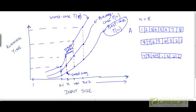Likewise, if I take the topmost — the highest points in the range — for the running times for the various input sizes, I am going to get the worst case running time. And if I determine the average running time for each input size and connect together those average values as a function of input size, I am going to get the average case running time.